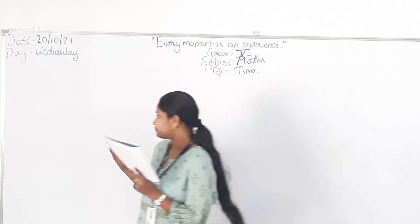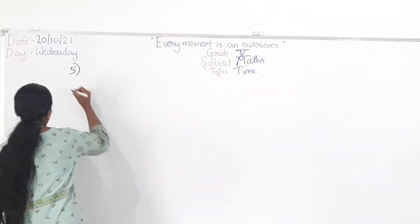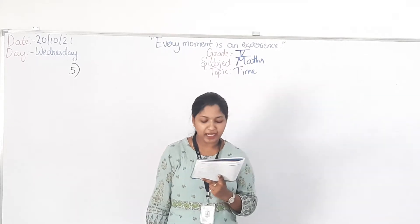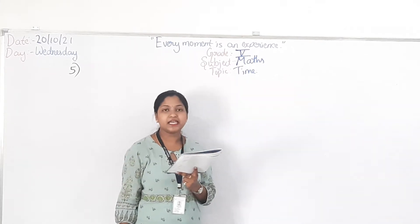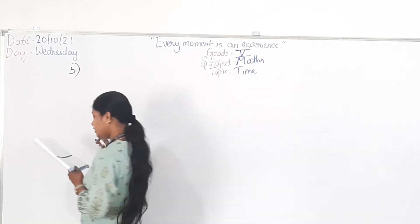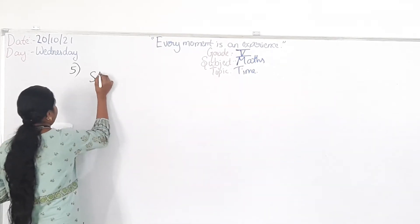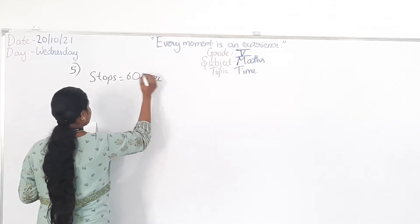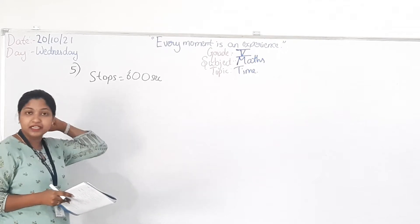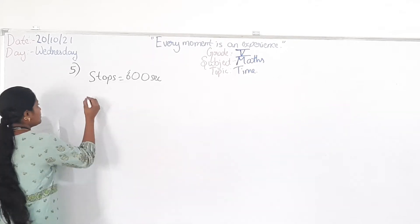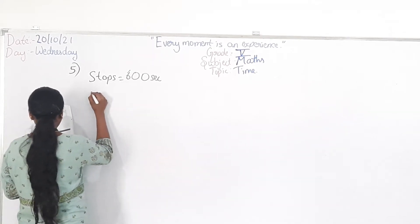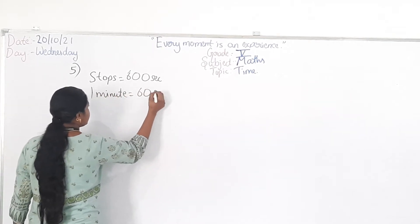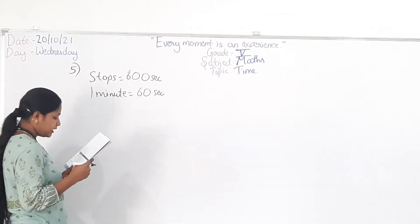Example 5. An airplane stops for 600 seconds at Mumbai airport. For how many minutes does it stop? So, what does it do? The question is, you have to convert seconds into minutes. So, how will you convert? One minute equals 60 seconds.